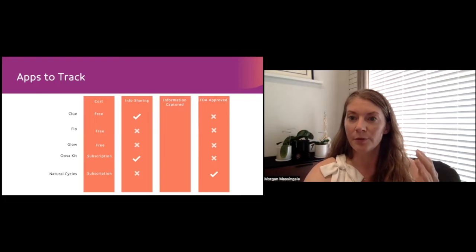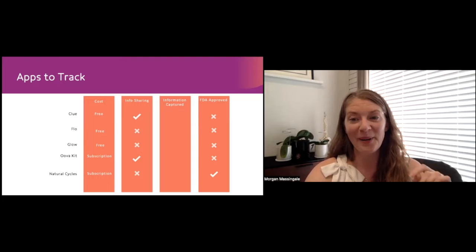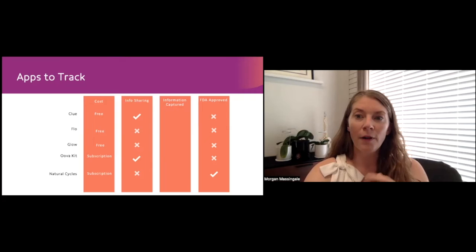The last one on here is Natural Cycles. Natural Cycles is a basal body temperature device and app. So it is a very well calibrated thermometer. And it is the only FDA cleared app and tracking system on the market.